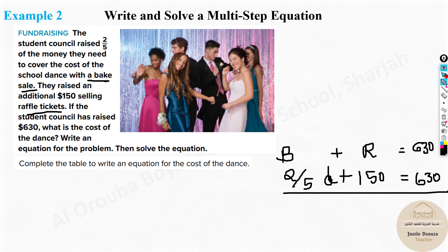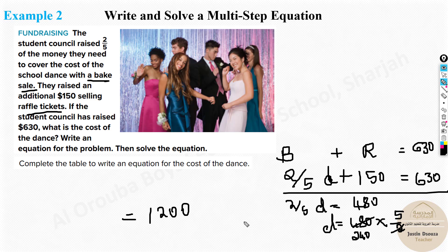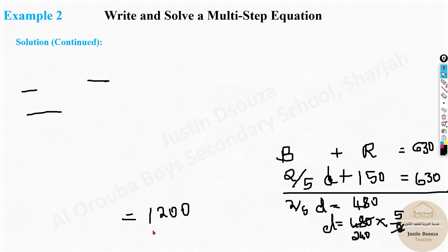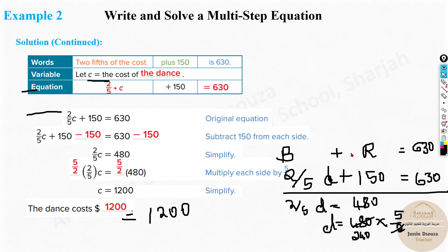Take 150 to the other side: (2/5)d = 630 - 150 = 480. Then multiply both sides by 5/2 (the reciprocal): d = 480 × (5/2) = 1200. So the dance cost is $1200. The book writes it as (2/5)c + 150 = 630, and solving that multi-step equation gives the same answer of $1200.